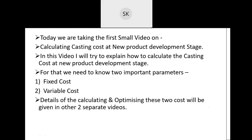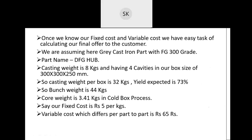Today we are taking a small video on calculating casting cost at new product development stage. In this video, I will try to explain how to calculate the casting cost at the new product development stage. For that we have to know two important parameters — one is fixed cost and one is variable cost. While calculating the casting cost, we have to understand these two things. Once we know our fixed cost and variable cost, we have the easy task of calculating our final offer to the customer.